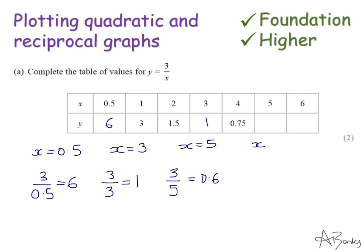And finally x is 6. Fill that one in. x is 6. That will give me 3 over 6 which is a half so that's 0.5. That's part a done.